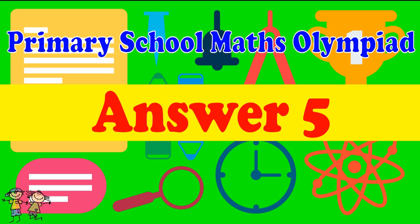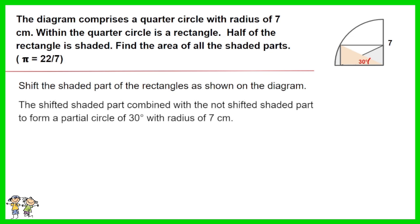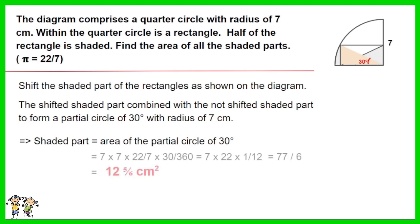Answer for Question 5. Shift the shaded part of the rectangle as shown on the diagram. The shifted shaded part combined with the not-shifted shaded part forms a partial circle of 30 degrees with radius of 7 centimeters. Thus the shaded part equals the area of the partial circle of 30 degrees. Work out the equation. The answer is 12 and 5 over 6 centimeters squared.